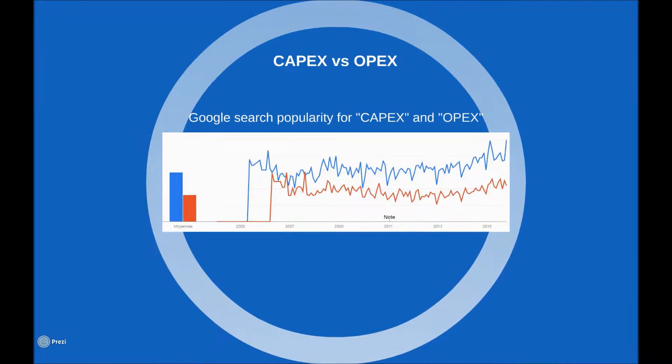To show where the attention of the industry and the public is actually paid, albeit in a very unscientific way, we are showing here the popularity of Google searches for these words. Now if you are part of the construction industry, you won't be too surprised by the result. OPEX is the lower curve and CAPEX is the higher curve, which should surprise the general public with very good reason. TOTEX is also shown on this graphic, but it is so small that it doesn't actually register.